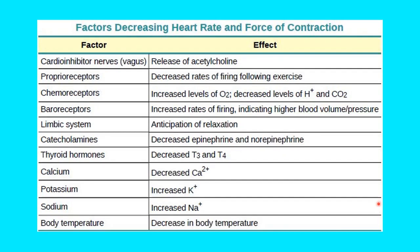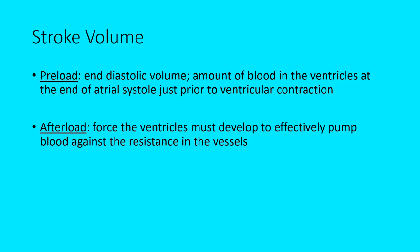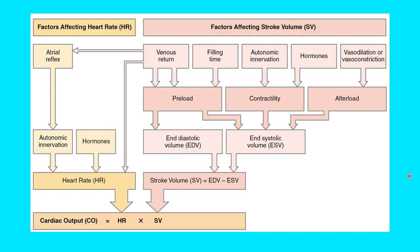Factors that decrease heart rate include a decrease in body temperature. Looking at stroke volume: preload is the end diastolic volume — the amount of blood in the ventricles at the end of atrial systole, just before ventricular contraction. Afterload is the force the ventricles must develop to pump blood against the resistance in the vessels. All these factors affect stroke volume and combine with heart rate factors to determine cardiac output.